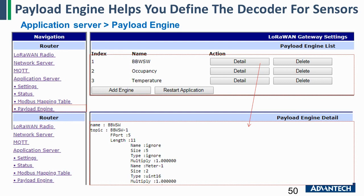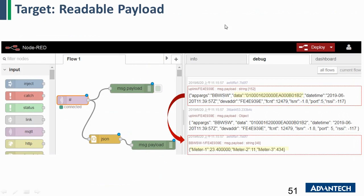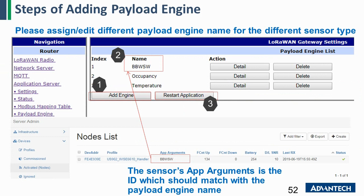Each payload engine will deal with the data and make the data become readable. The function of the payload engine is to transfer and change the raw data into readable data. This is the raw data payload, and after the payload engine deals with the data, you can see the readable data here. There are three steps to complete the payload engine tool.